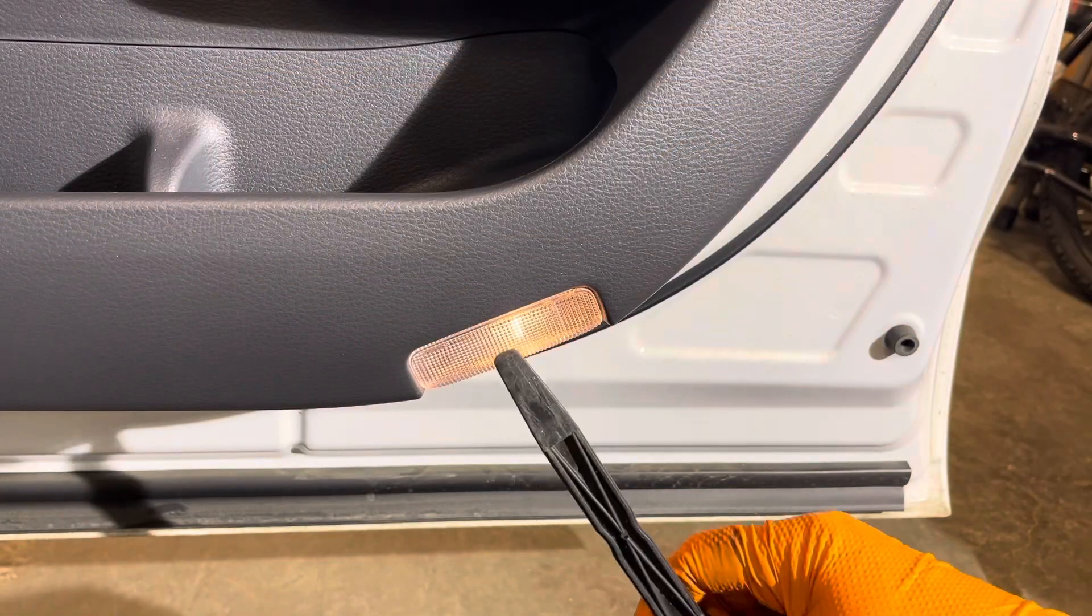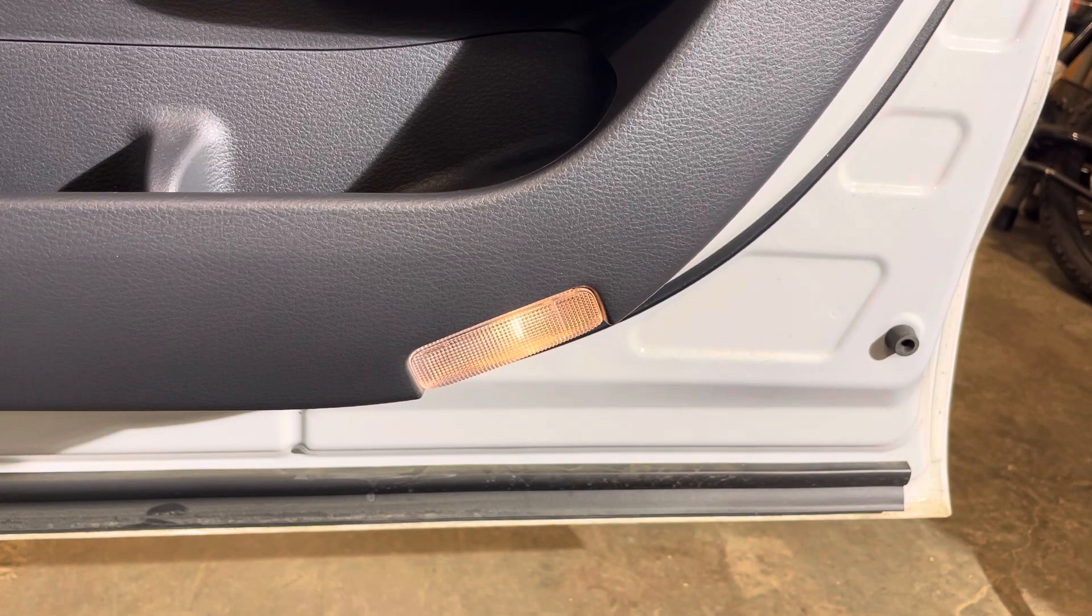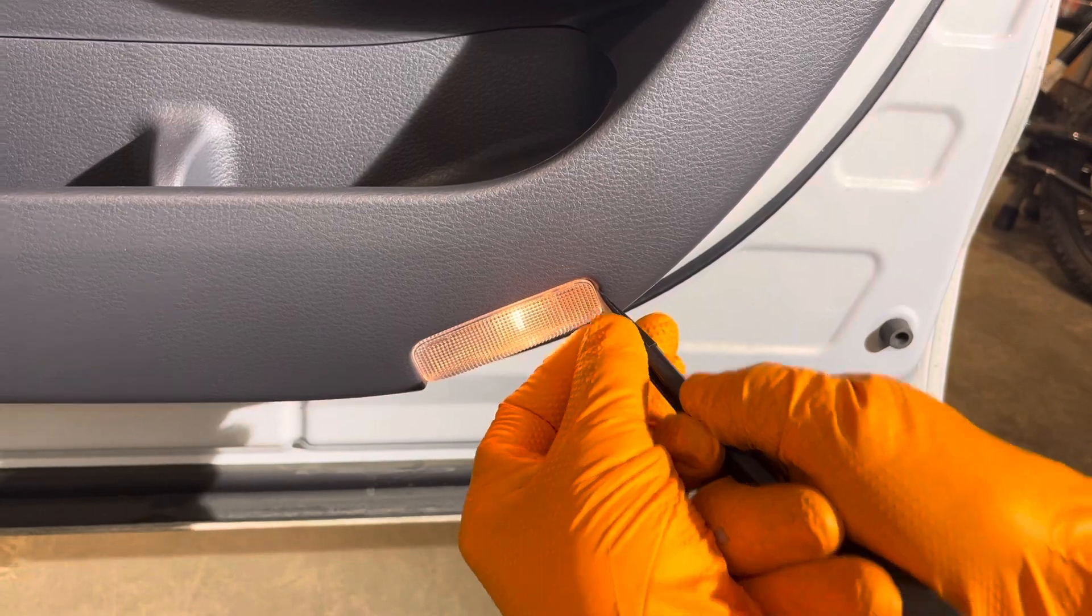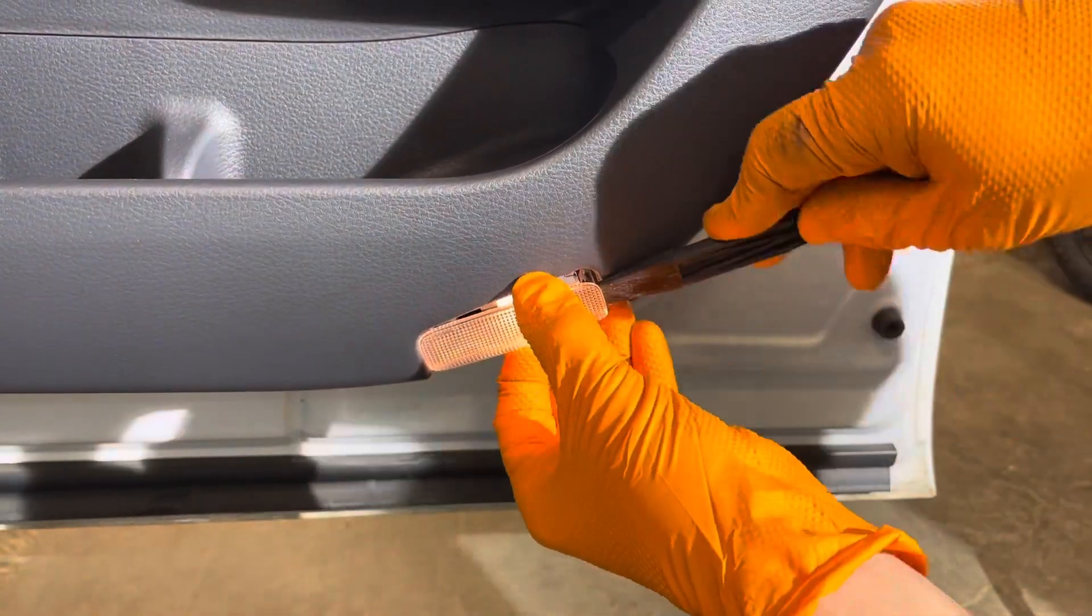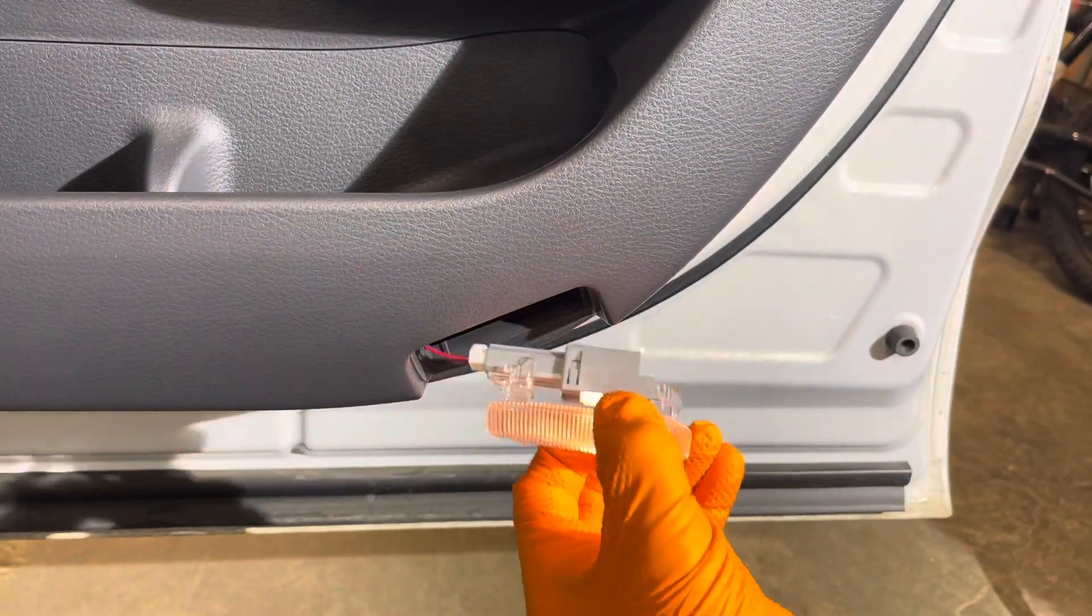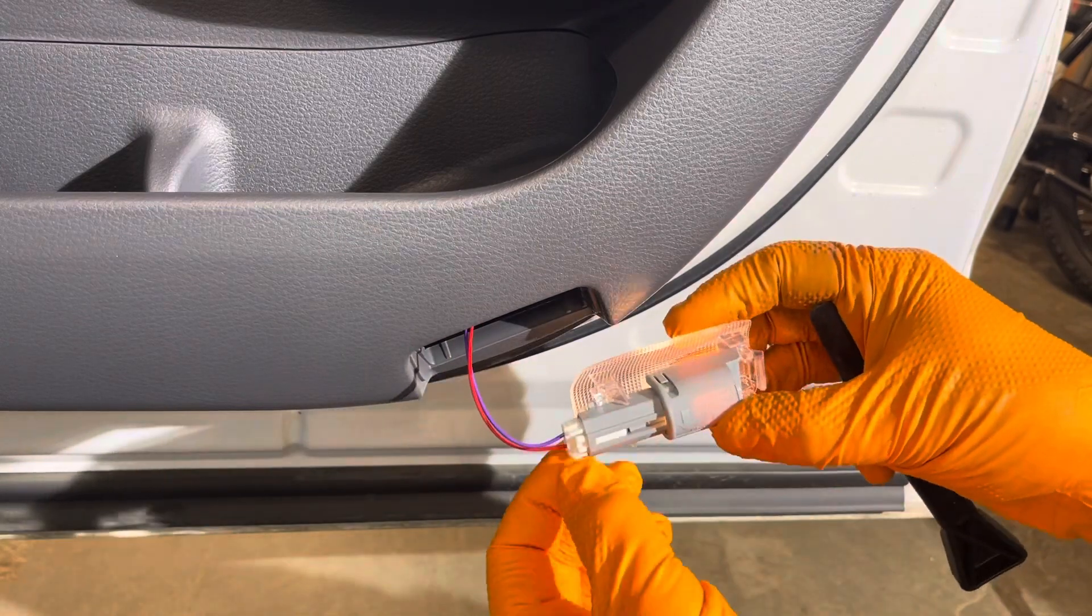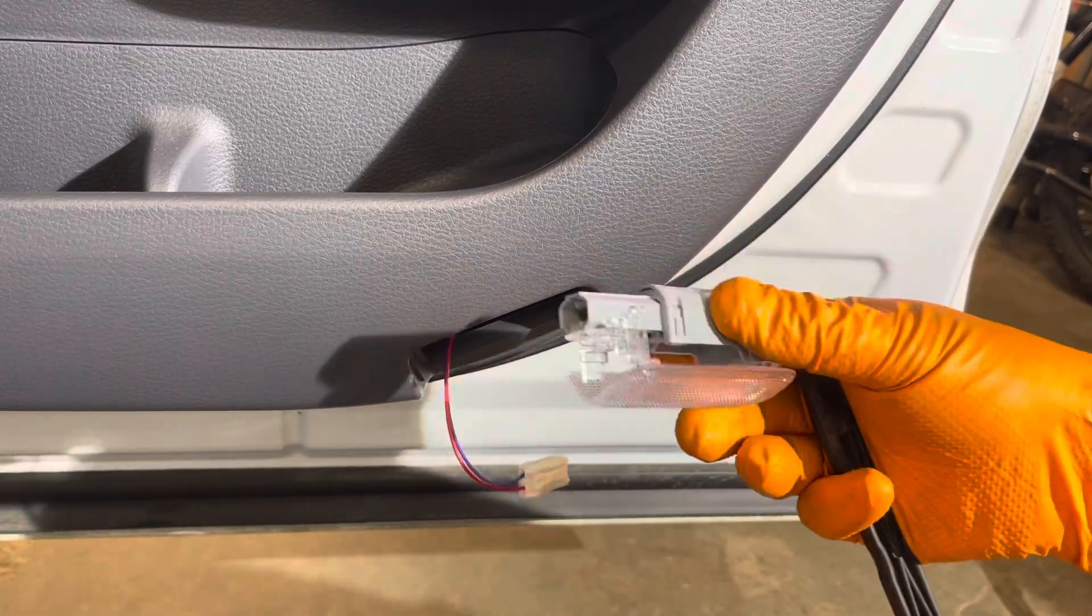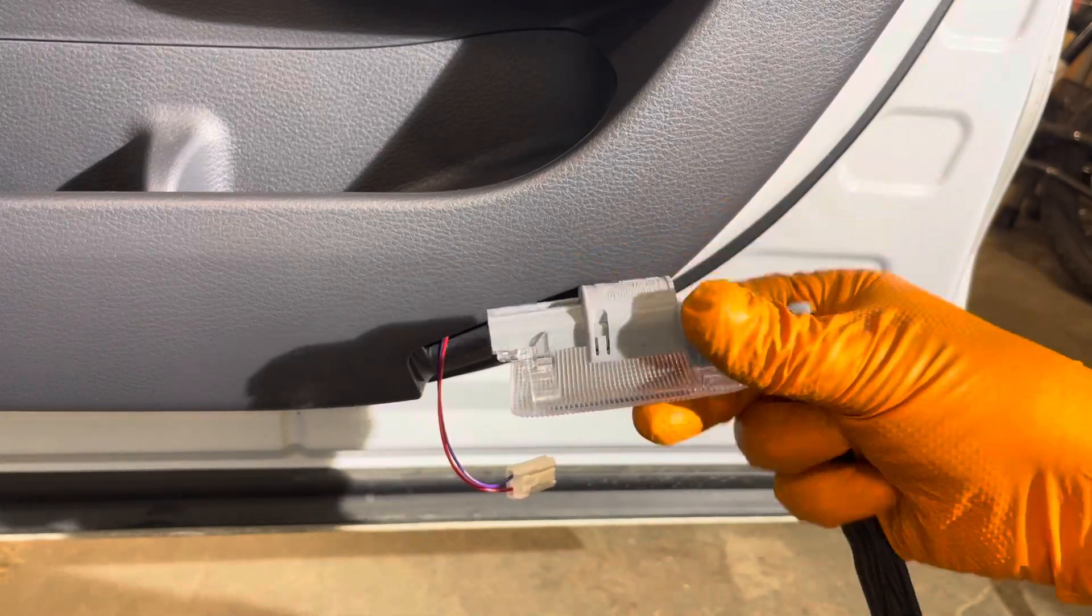Open the front door and locate the courtesy light assembly. Then insert the trim tool from this side right here and pry it out and slide it this way. There's a tab right here, the little white tab. Press it and you can disconnect it, and now we can take it apart and get the bulb out.